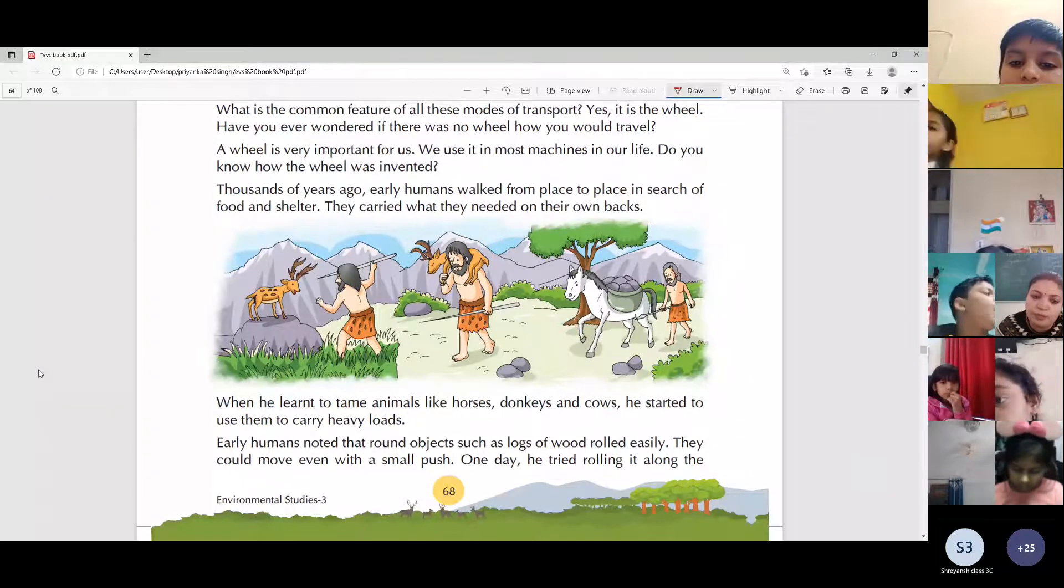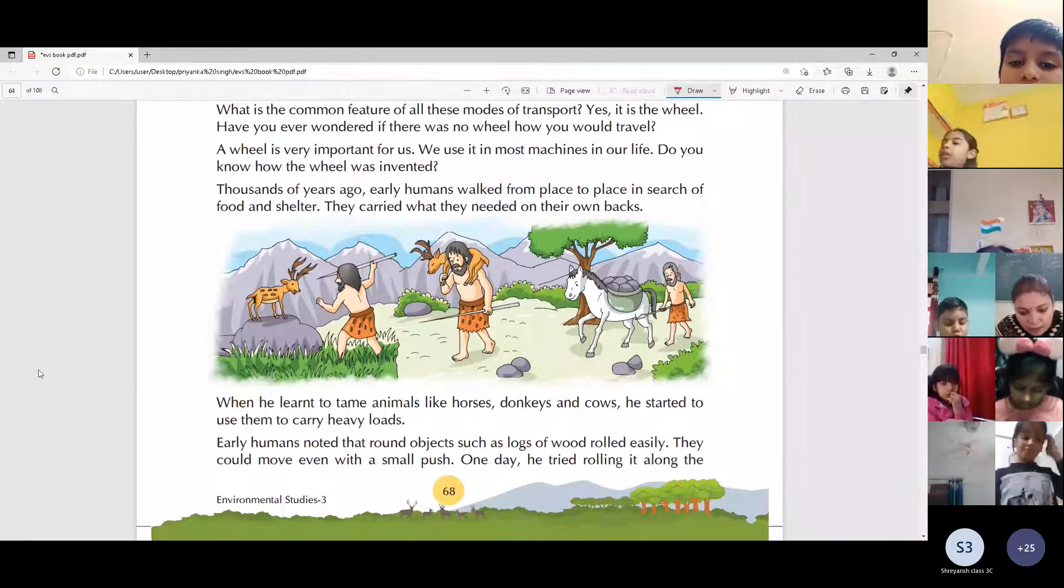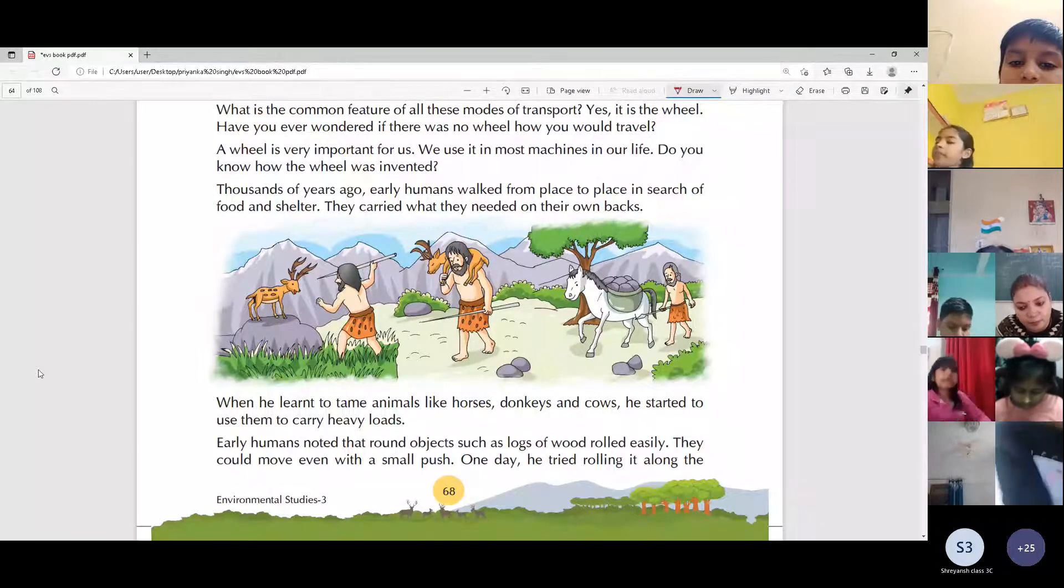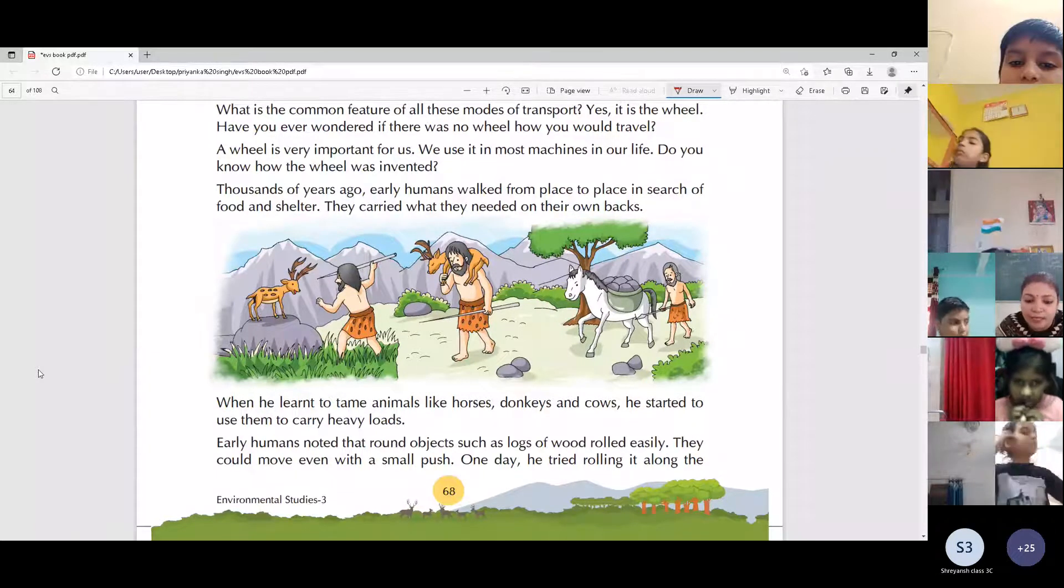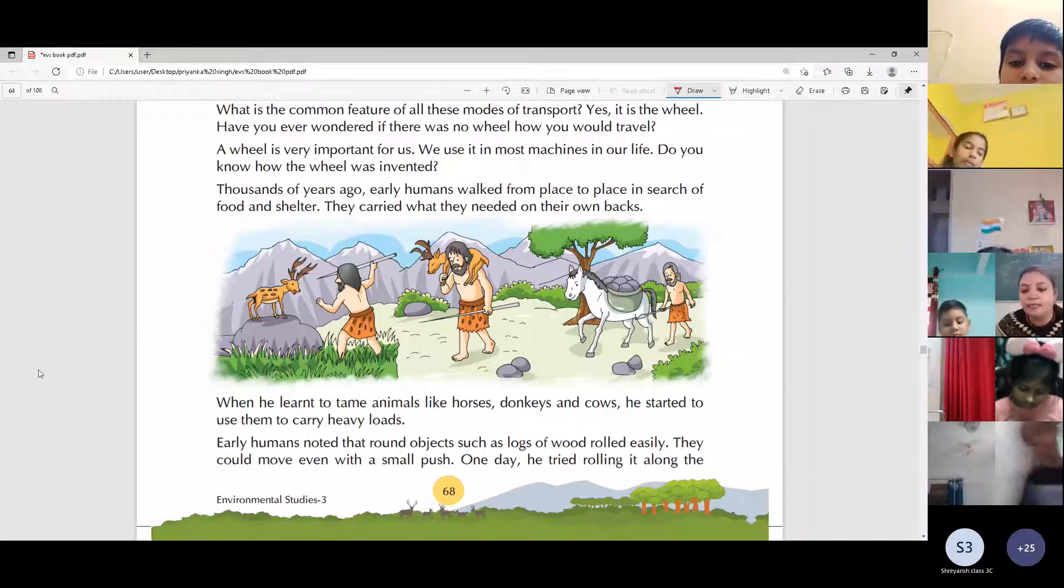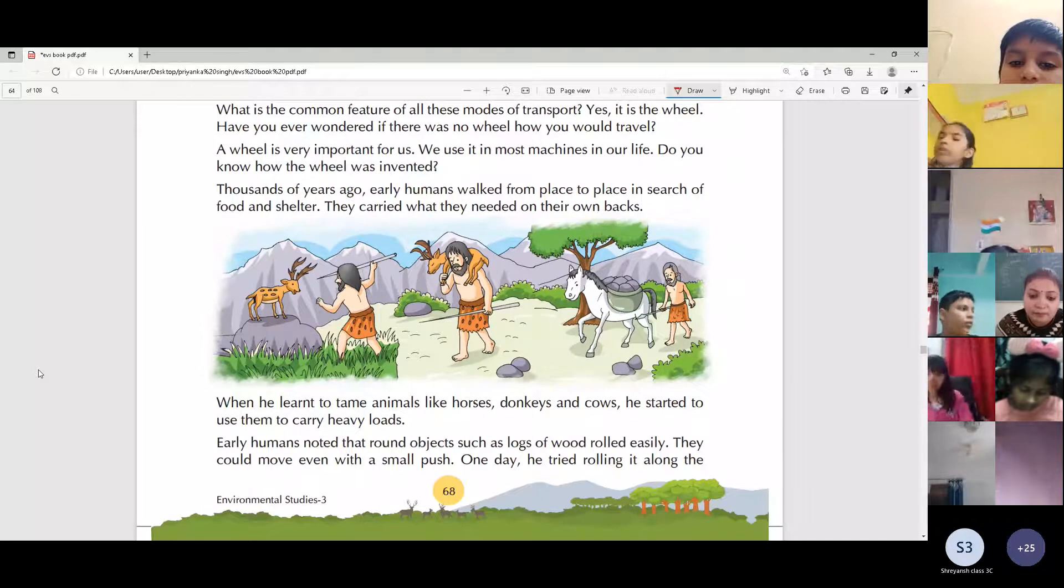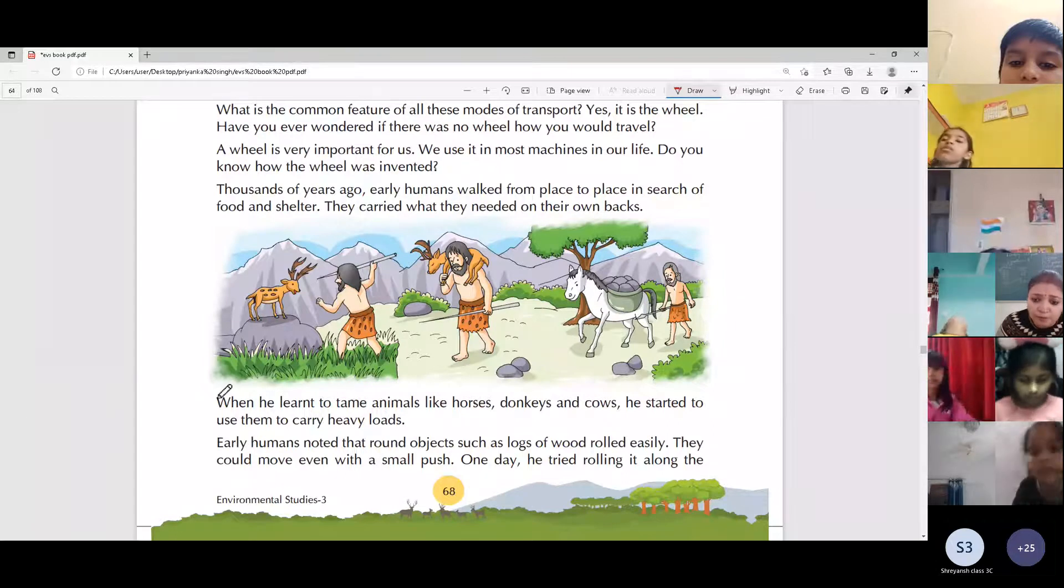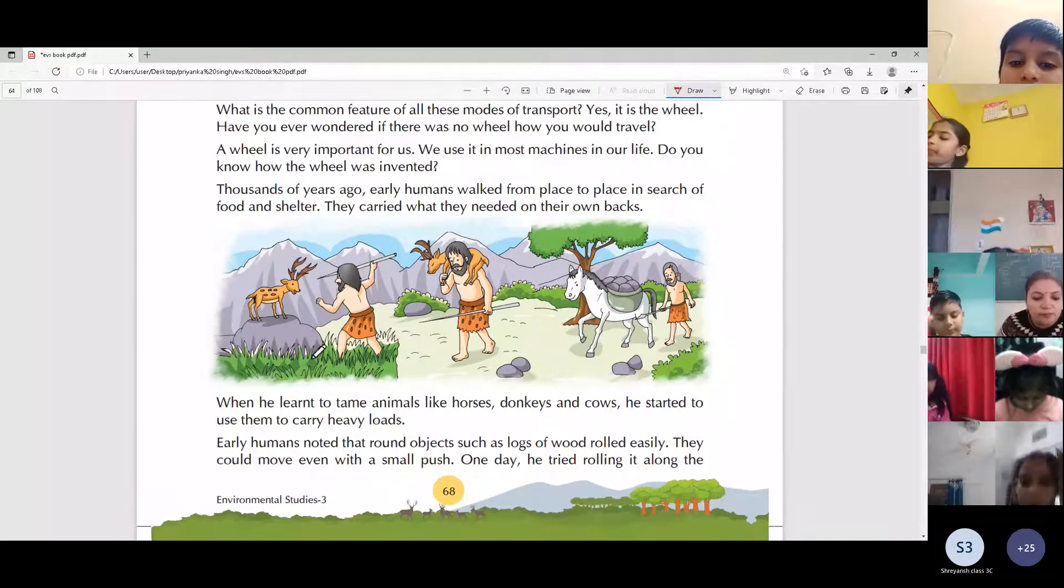In search of food and shelter they used to walk. When the fruits from the trees were finished, they didn't know how to store food. So what did they do? At one place the food was finished, then they moved to another place. Because shelter was also important. At that time, they used to load all the things on their own back.